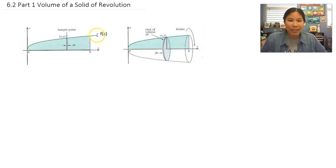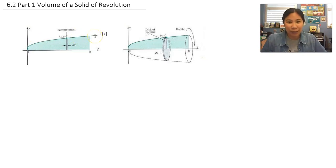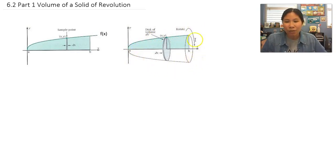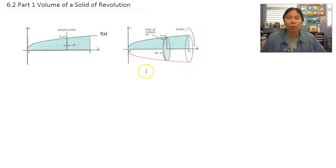Integrals were the most accurate way to find the area underneath this curve. So what we're going to do is, to create the solid of revolution, take this curve for the f of x equation and rotate it. If you can imagine it rotating around the x-axis, it'll create a little cone shape.